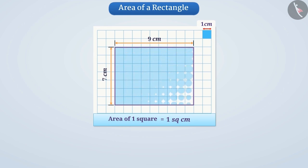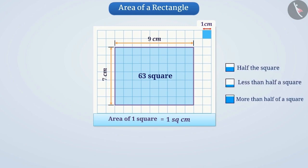Here, the total number of squares is 63. None of the squares are half, less than half or more than half. Therefore, we can say that the area of this rectangle is 63 cm².